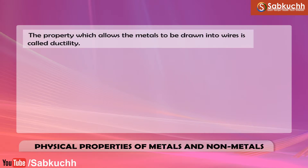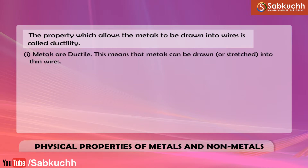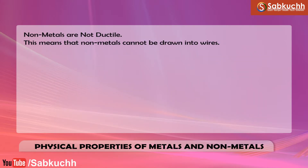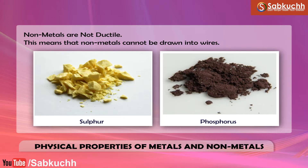Ductility. The property which allows the metals to be drawn into wires is called ductility. Metals are ductile, which means that metals can be drawn or stretched into thin wires. Gold and silver are among the best ductile metals. Non-metals are non-ductile, which means that non-metals cannot be drawn into wires. Sulfur and phosphorus are non-metals and they are not ductile.